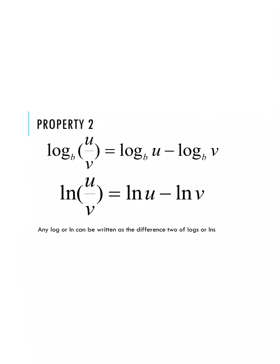For our second property, we have log base b of u divided by v. When we split that up, we get log base b of u minus log base b of v. We were dividing inside our parentheses, and when we expand it we are now subtracting. For natural logs: the natural log of u divided by v expands to the natural log of u minus the natural log of v. Any log or natural log can be rewritten as the difference of two logs, given that we had an expression being divided.